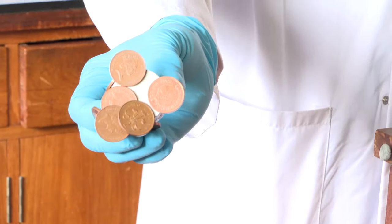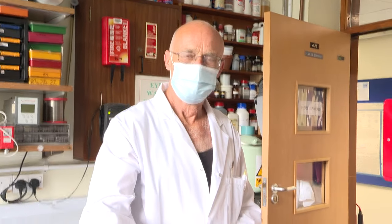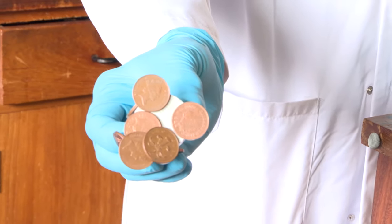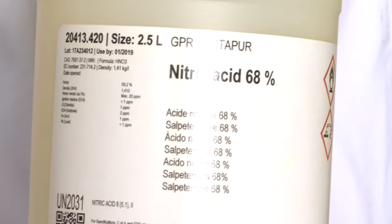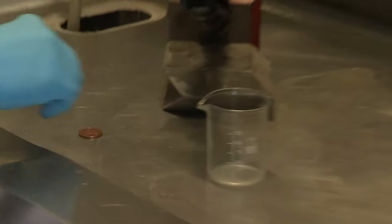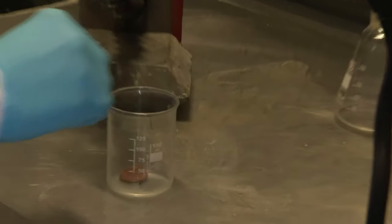But iron is passivated. That is, it reacts a small amount, and then the surface gets a coating, and the reaction stops. Neil tried the experiment before Brady arrived in Nottingham, and it worked perfectly. The copper dissolved, and he was left with an iron coin that looked more or less the same as the copper one. You could see all the writing and everything else.